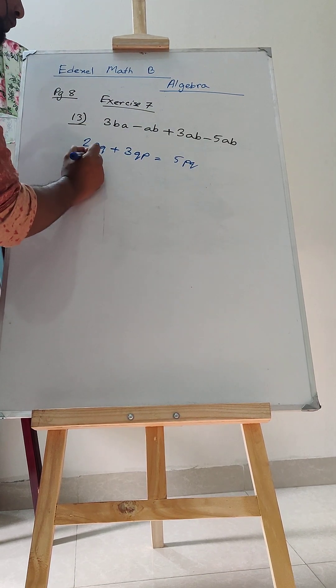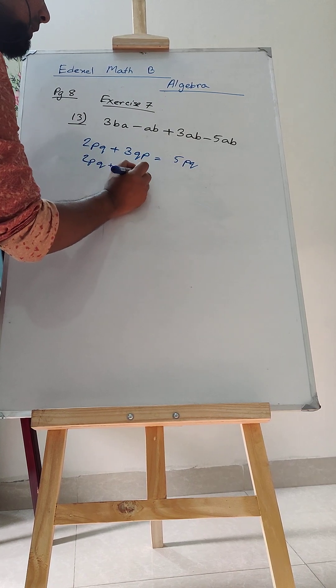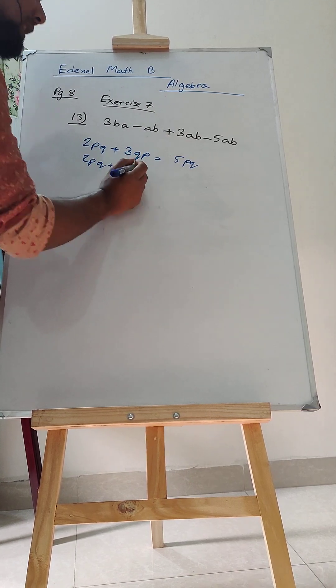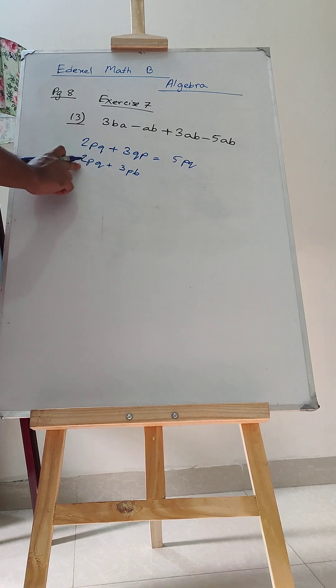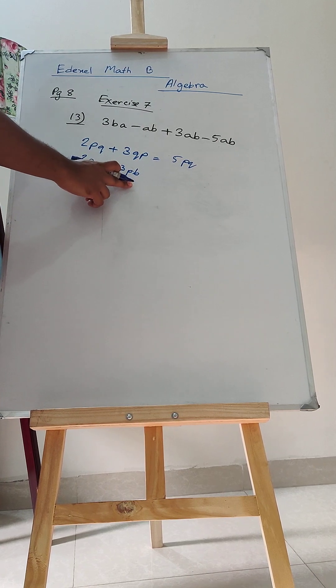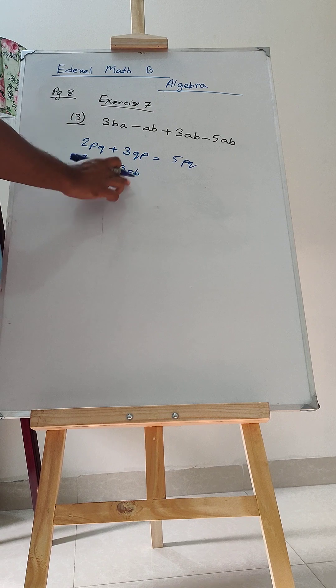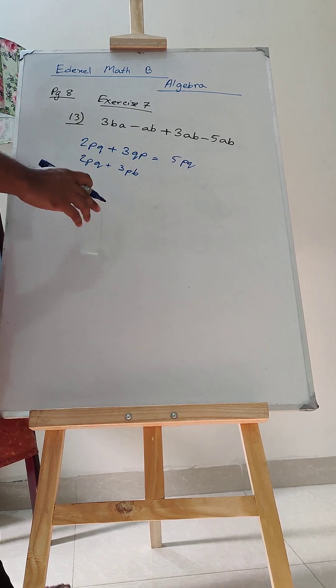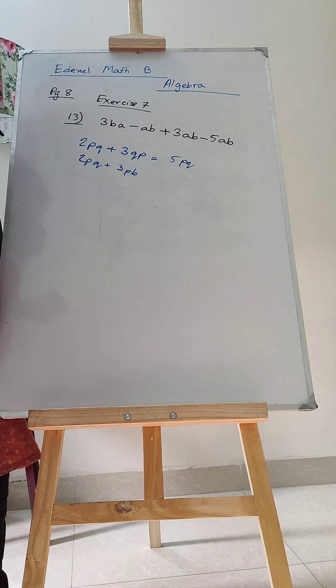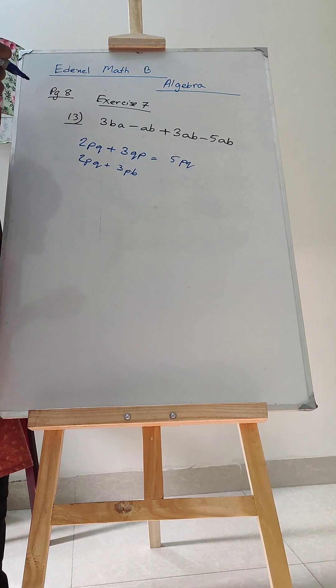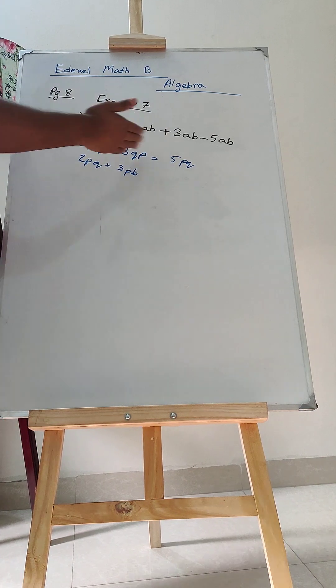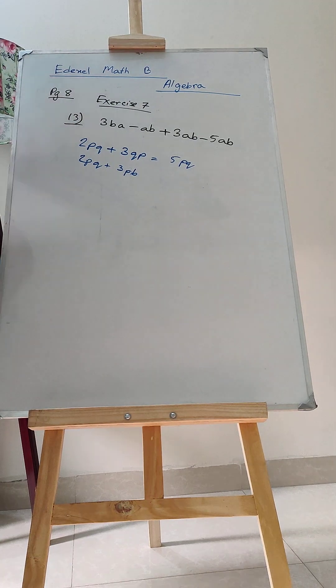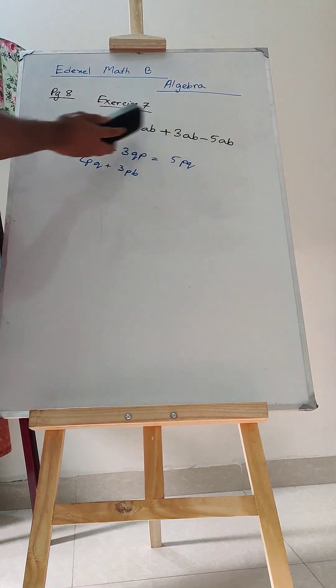But if you have 2PQ plus 3PB, you have PQ here, but you have got PB here. Then this PQ and PB is not the same. You cannot add, you cannot subtract, you cannot do anything with these type of different variables, different set of variables. So, here, these are the main basics to solve a math like this.